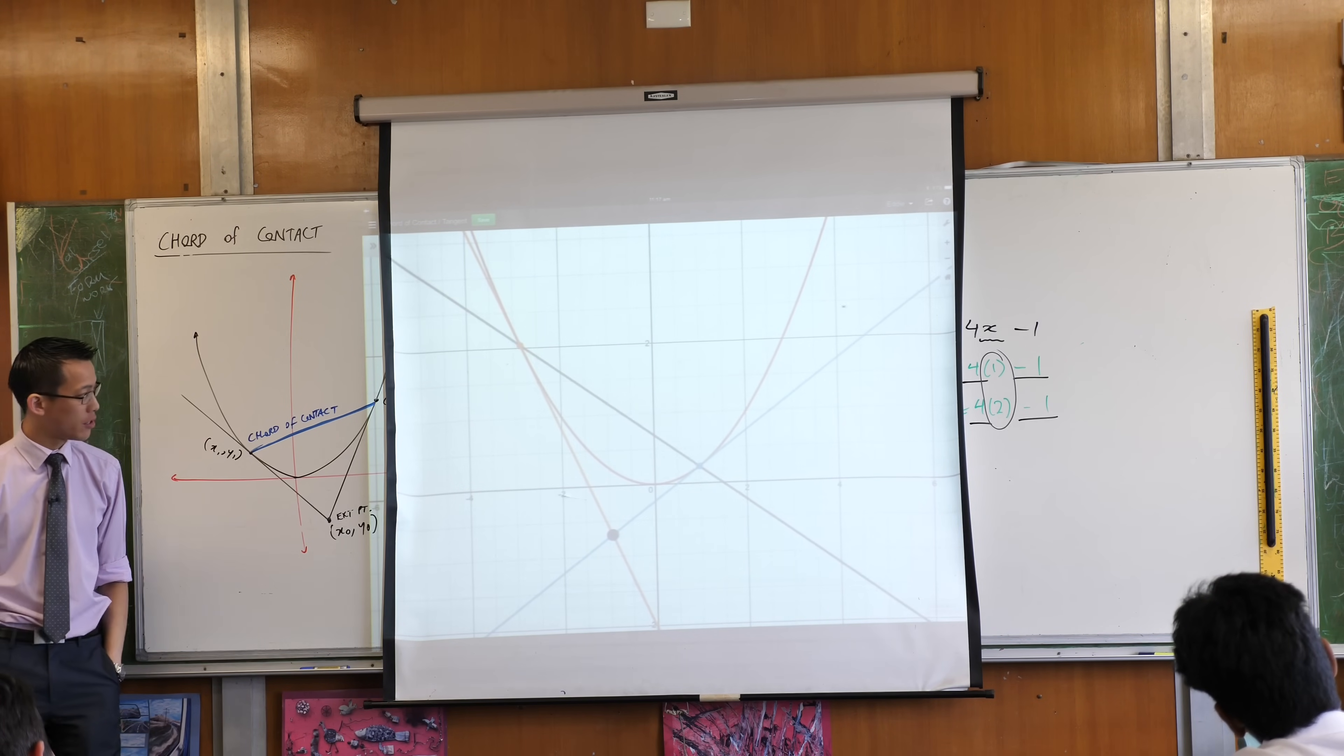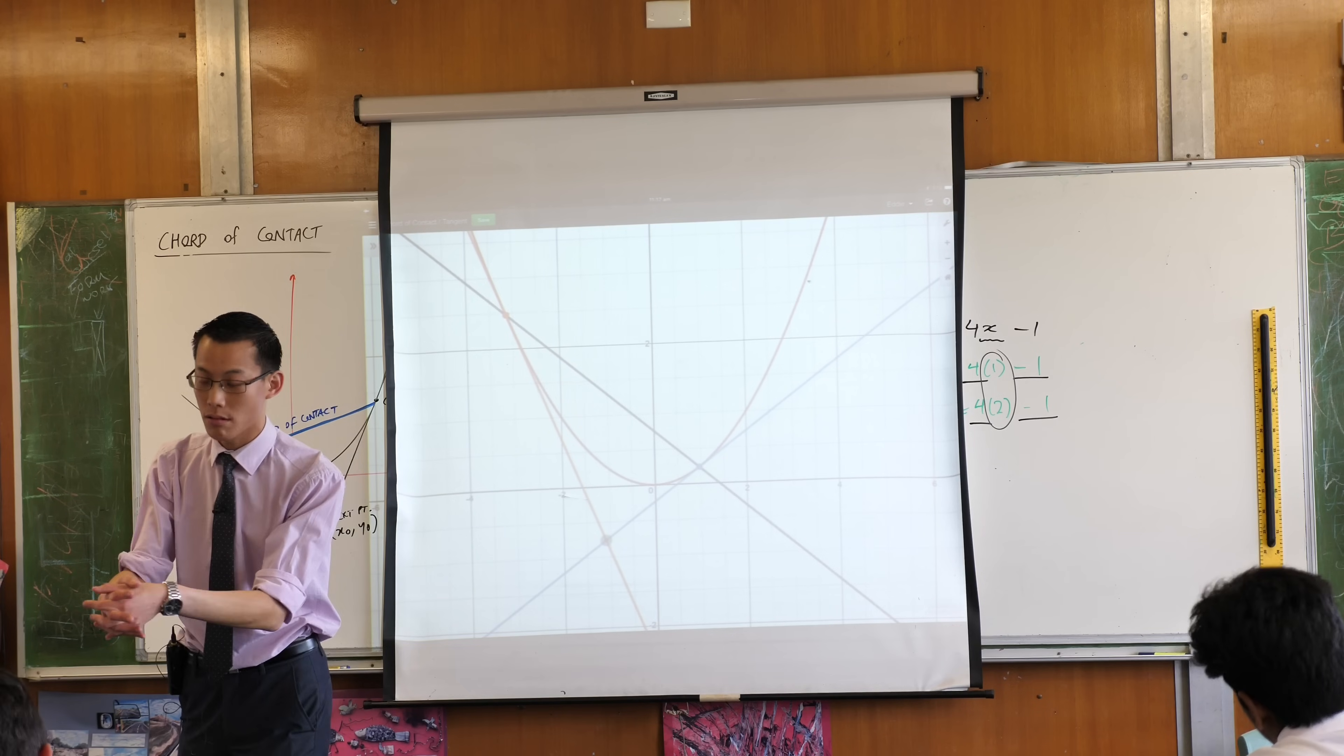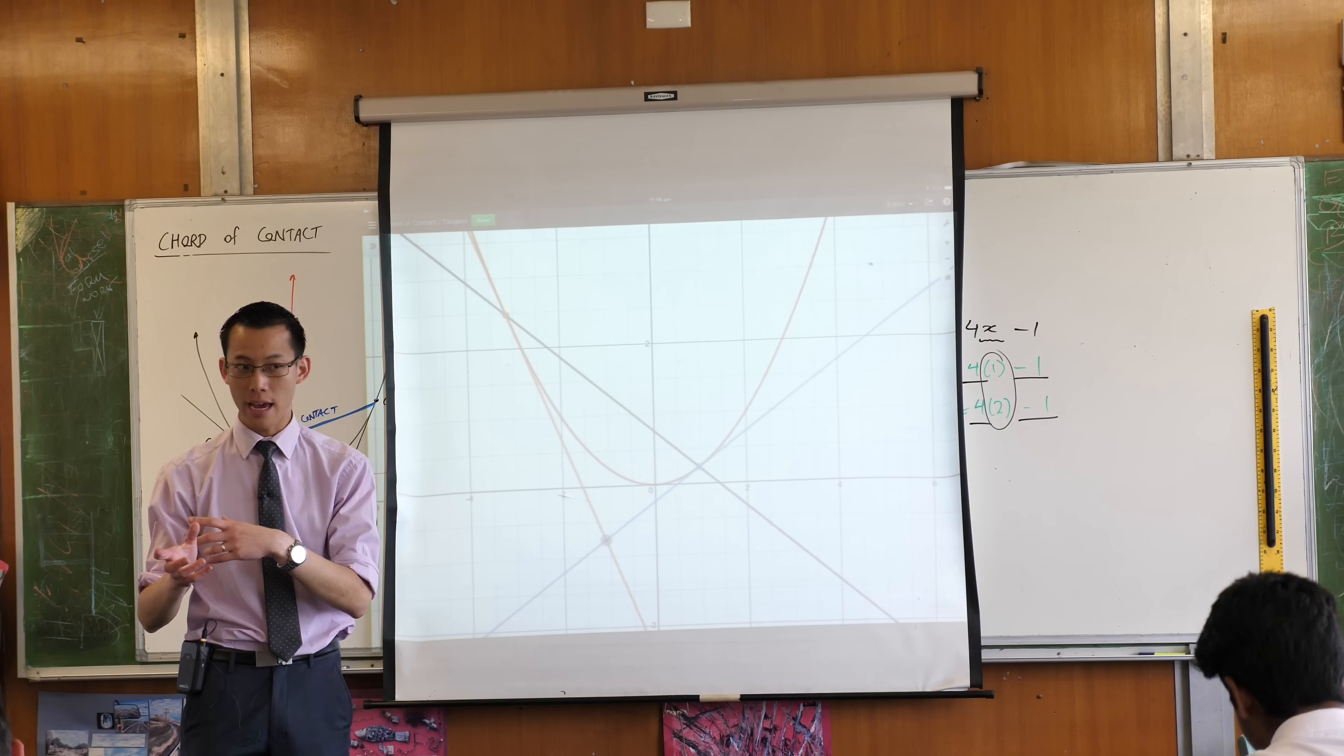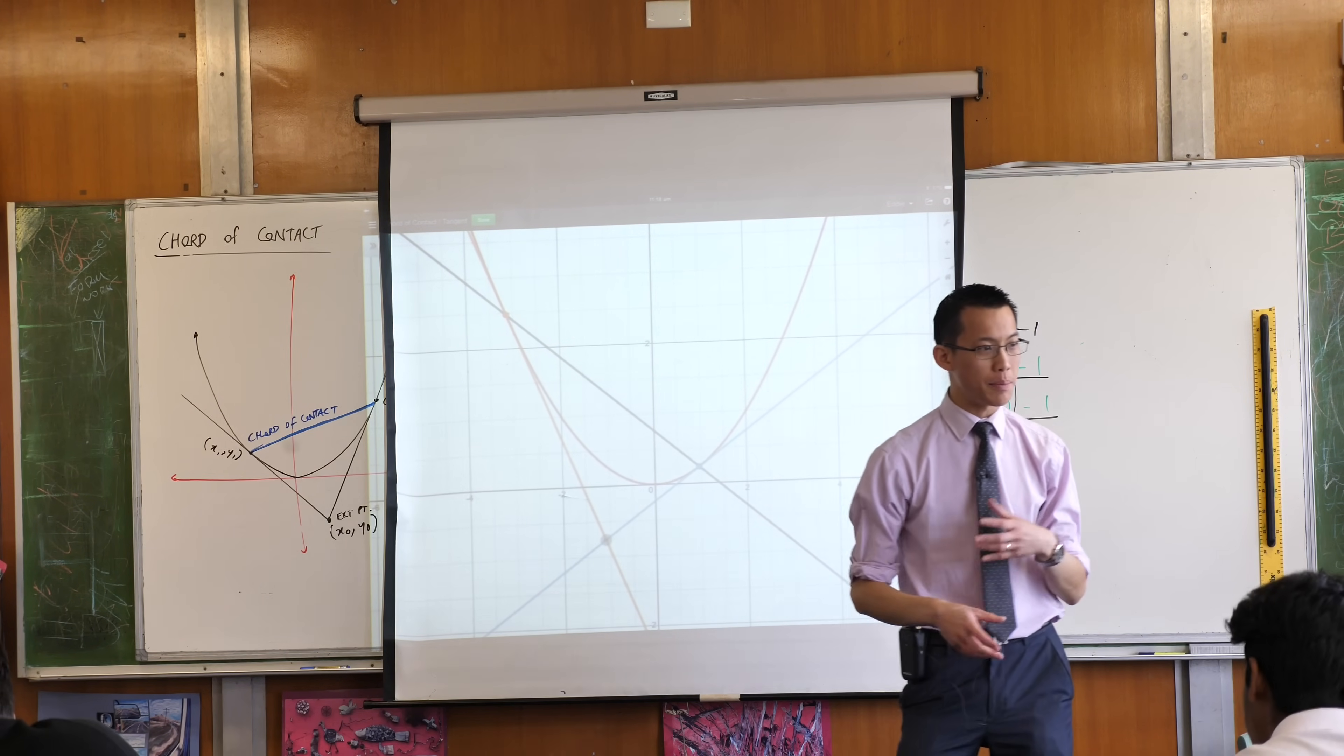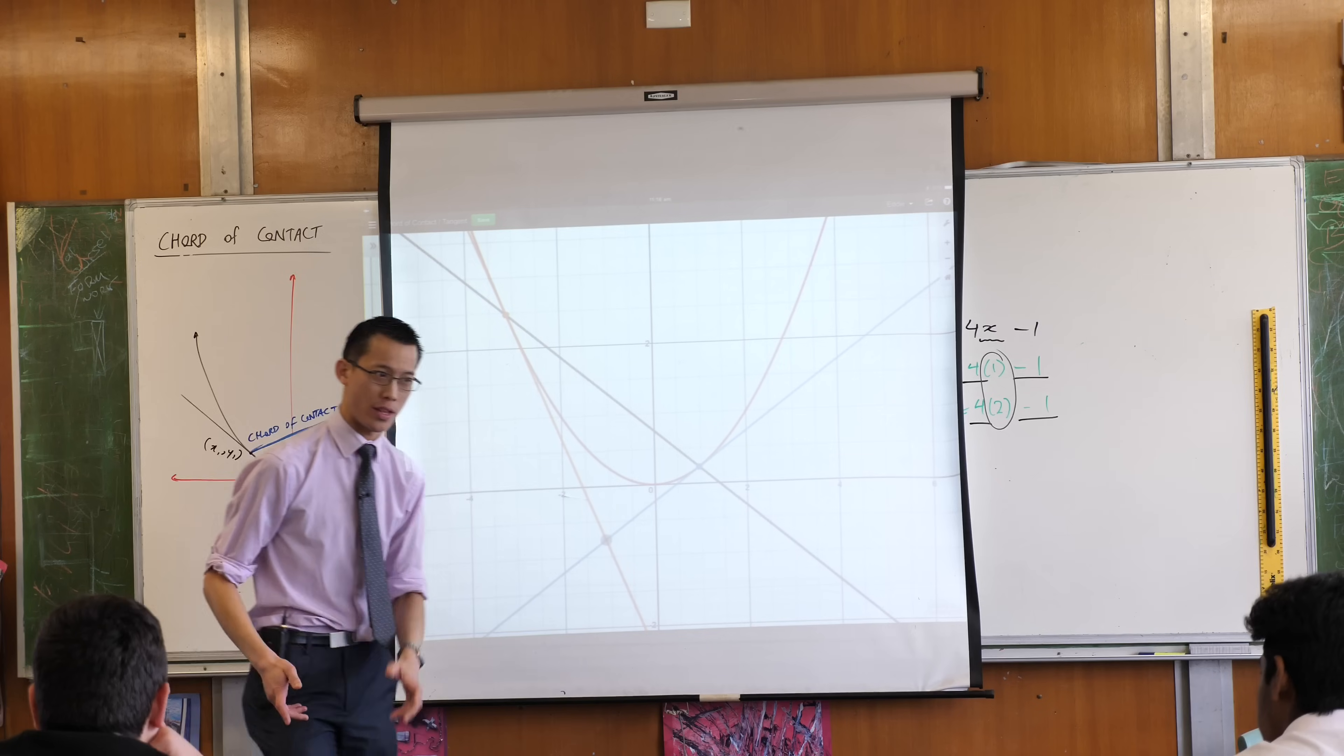Now, here's what I want you to notice. What happens if I play around a little bit and I want you to look at your neighbor's chord of contact. I want you to look at the chord of contact and I also want you to compare it to where their external point is. I asked you all to pick a different external point. Some of you have probably picked an external point quite far from your parabola and some of you have picked one that is quite close. I wonder if you notice any differences between them.